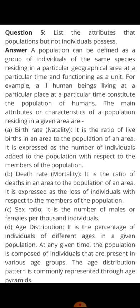The next attribute is mortality, which is the death rate — how many organisms of that species died in that particular area, meaning how many individuals of that species have been lost. Then next is sex ratio, which means how many males and females per thousand in the population.